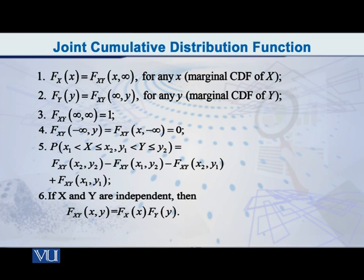The second property: the marginal CDF of Y, capital F of Y at the point small y, is equal to capital F of the random vector XY at the point infinity, y. And the third one: capital F of the random vector XY at the point infinity, infinity is equal to 1.